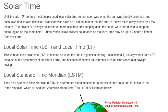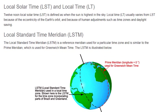Local solar time (LST) is defined as when the sun is highest in the sky. Local time usually varies from LST because of the eccentricity of the Earth's orbit, and because of human adjustments such as time zones and daylight saving.